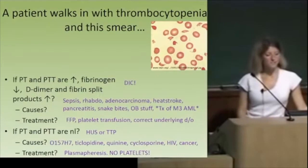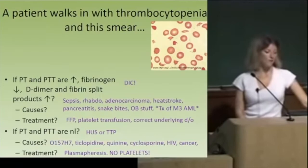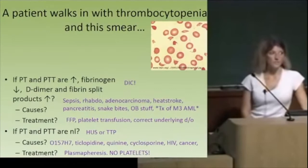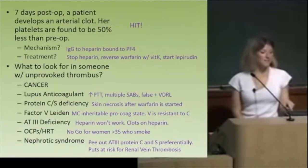If the PT and PTT are normal but you still see schistocytes on the smear, that's TTP or HUS. O157:H7 causes HUS, and some drugs are associated with TTP — the most important one is ticlopidine. Treatment: do not give platelets. You want plasmapheresis. TTP is actually one of the only things that will get you paged on weekends if you go into pathology.